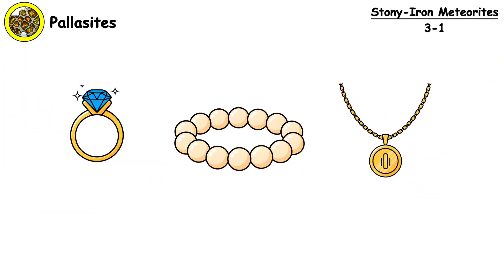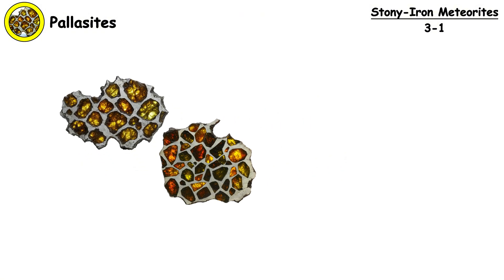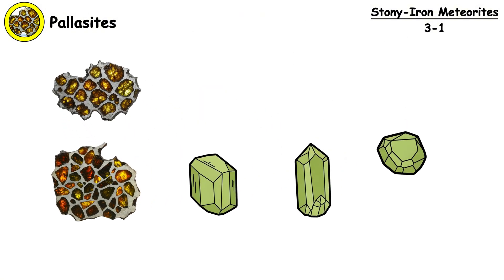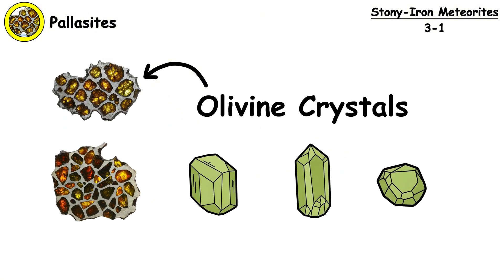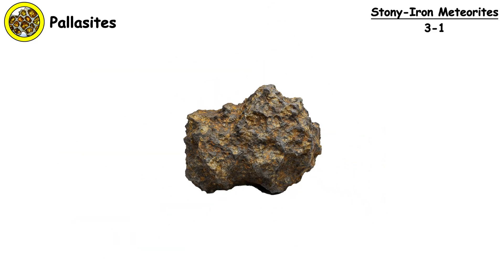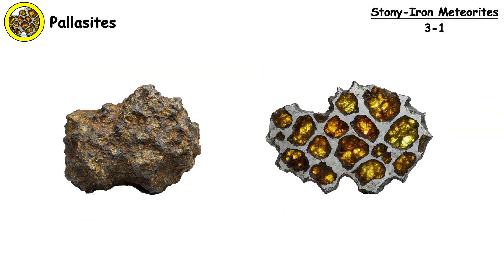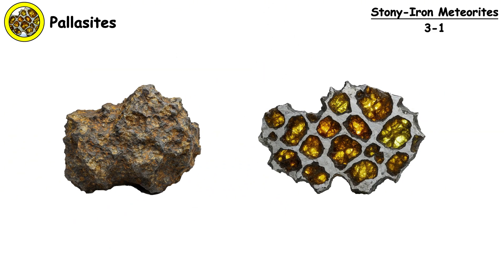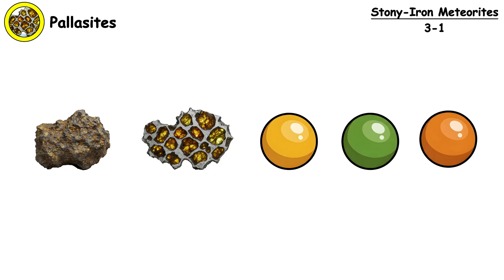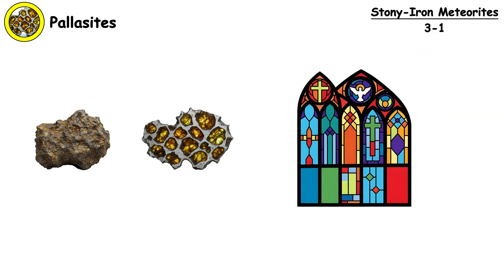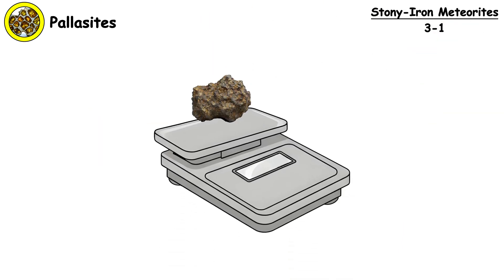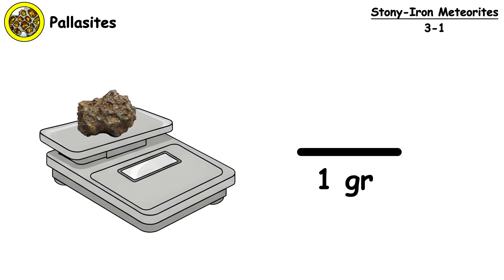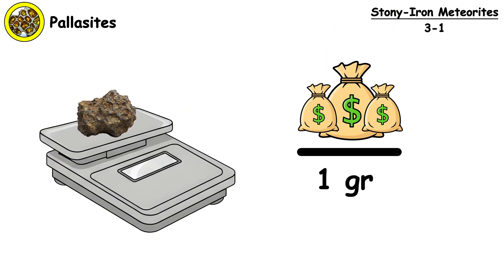Pallasites. They are the universe's jewelry. These stunning meteorites contain translucent olivine crystals embedded in a metallic iron-nickel matrix. When cut thin and backlit, they glow with golden, green, and amber hues, like stained glass windows from space. A single gram of quality pallasite can sell for hundreds of dollars.